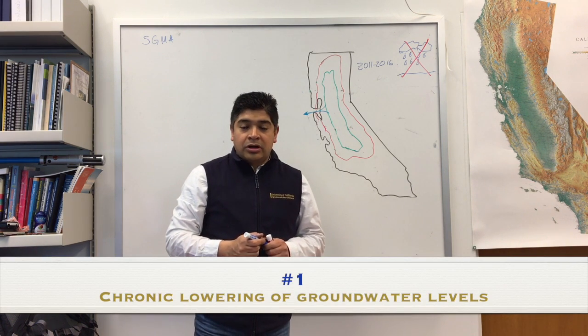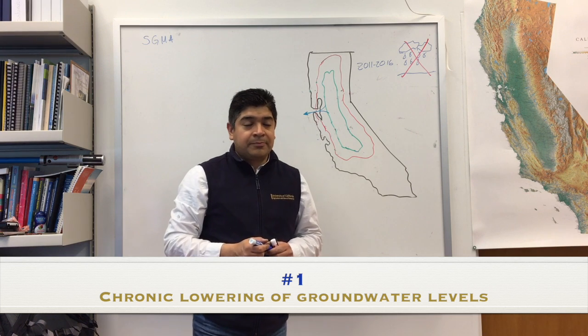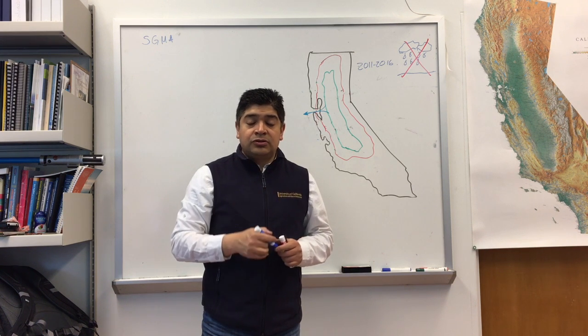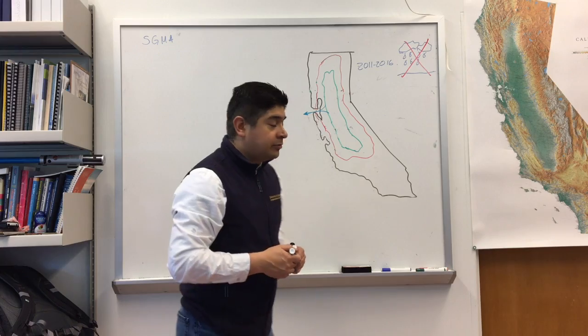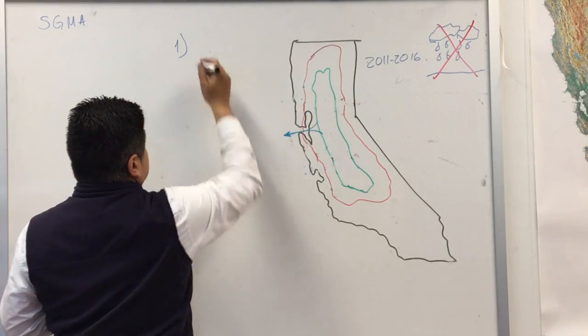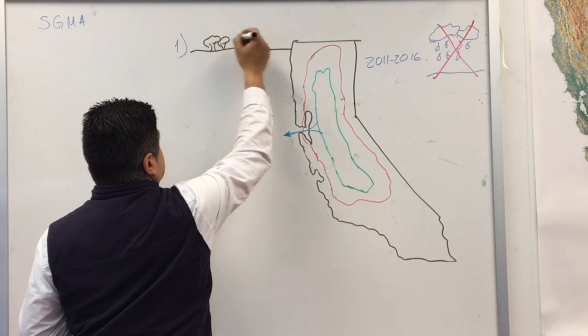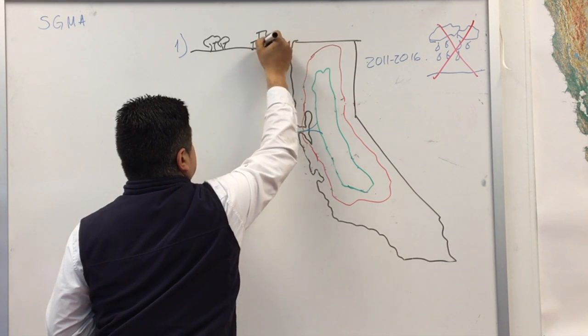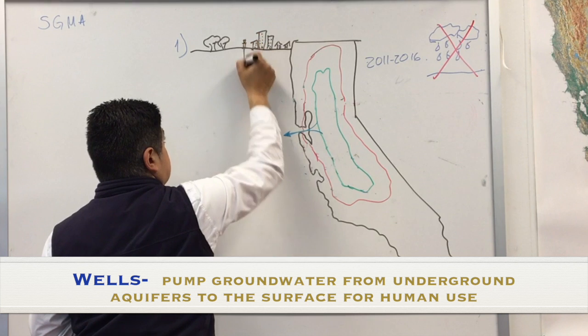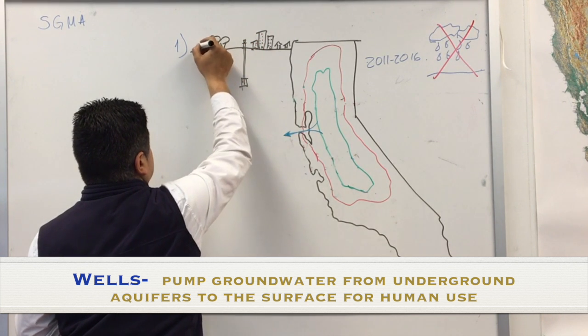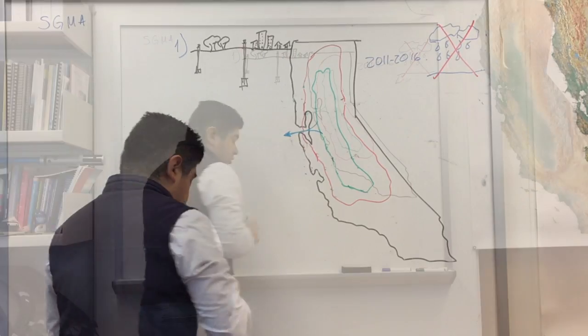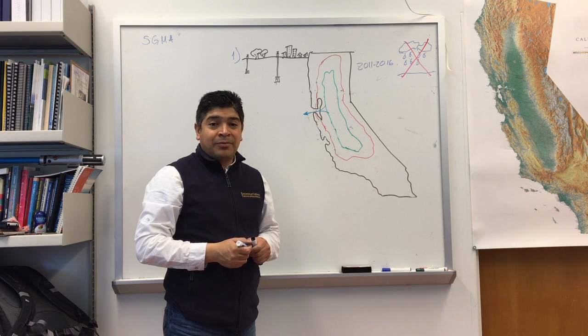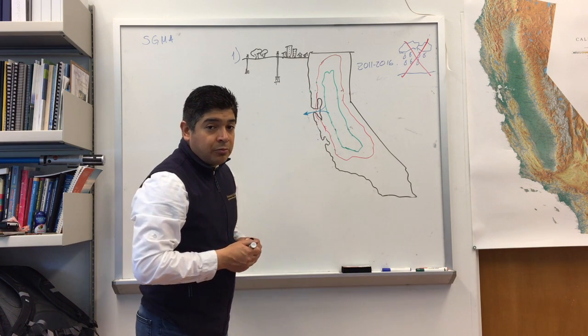Undesirable result number one, chronic lowering of groundwater levels. As we have seen, as we keep extracting water out, basically all those groundwater levels can go down. What this legislation is trying to prevent is that through time, the water table under the aquifers that we're withdrawing will go down.